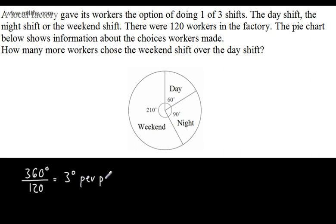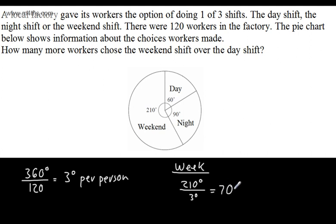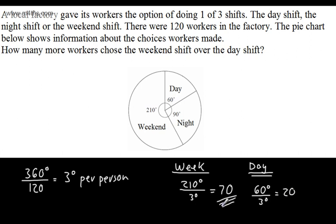360 divided by 120 gives us 3 degrees per person. Looking at the weekend sector: 210 degrees divided by 3 degrees gives 70 workers. Looking at the day shift sector: 60 degrees divided by 3 degrees gives 20 workers. So 70 minus 20 equals 50 — 50 more workers chose the weekend shift over the day shift.